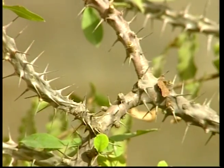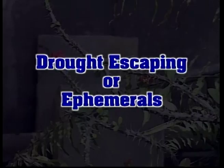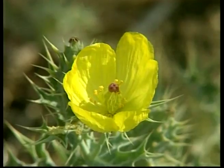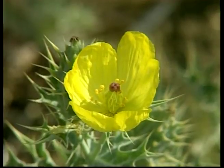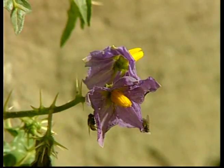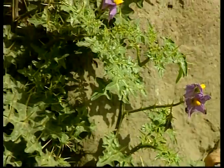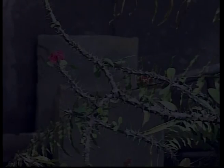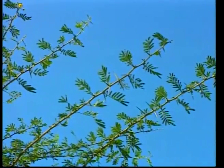Xerophytes are further classified into four categories. First, drought escaping or ephemerals: they have a very short lifespan of a few months and complete their life quickly, setting seeds and disappearing before the dry season starts. Second, drought evading: they evade or avoid drought due to their small size and prostrate habit. Third, drought resistant: they resist drought either by having small leaves or by shedding leaves.